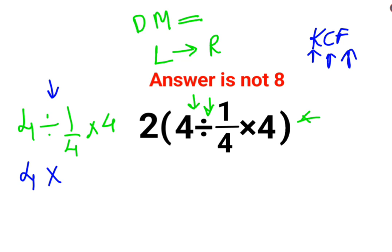And F stands for flipping or taking the reciprocal of 1/4 which is 4, multiplied by 4. So here we are getting this as 64.